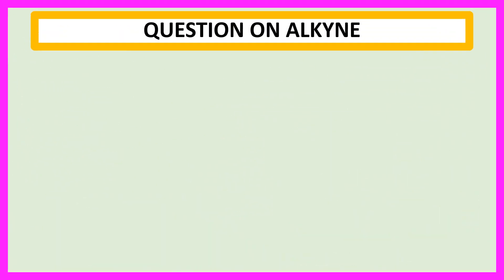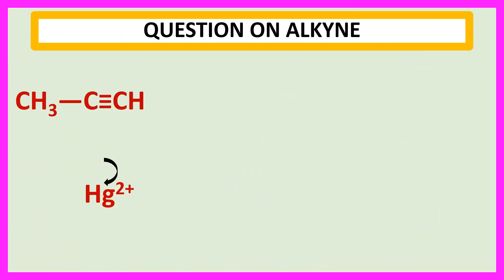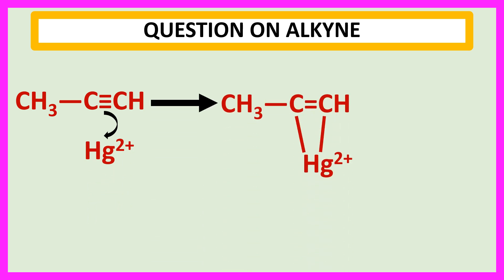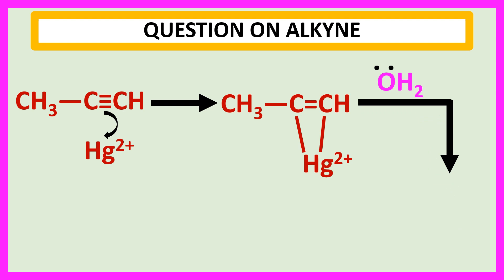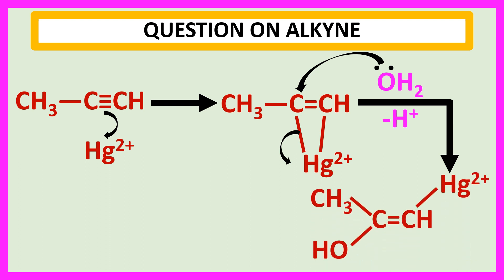At the first stage, propyne reacts with Hg²⁺ and forms this complex. In the next stage, the oxygen atom of water with its lone pair attacks this carbon, this bond breaks, and one H⁺ is removed. So this product is formed in the next stage.